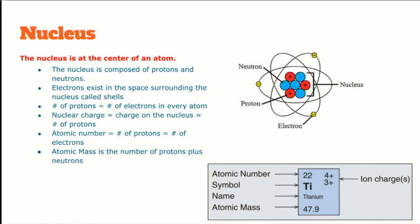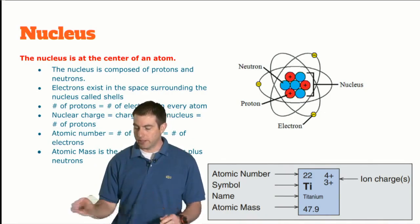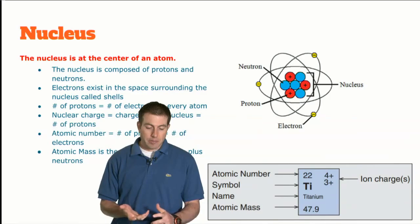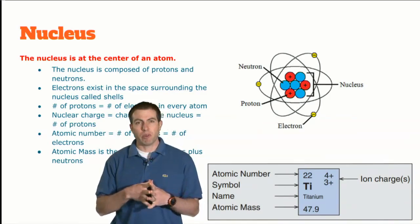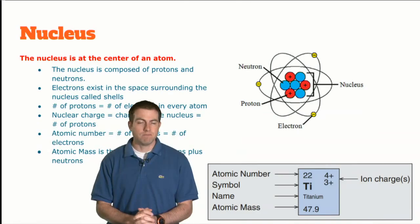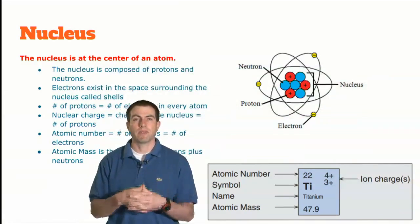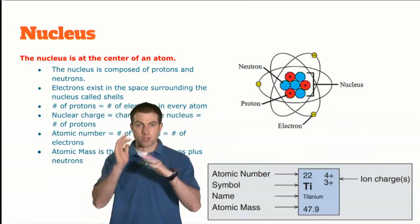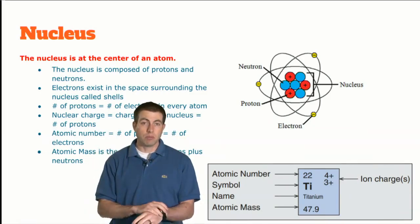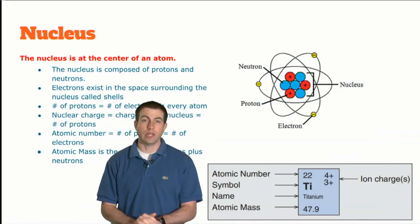The atomic number is the number of protons, and every time you change the atomic number you get a new element. The atomic mass is how massive the nucleus is — protons and neutrons are really big compared to electrons, so electrons don't have much impact on mass. The atomic mass is protons and neutrons together, so if we subtract those two, we end up with the number of neutrons in the element.